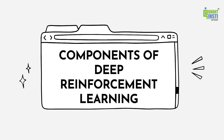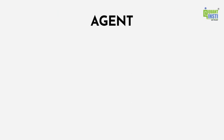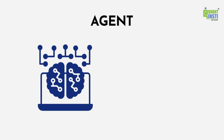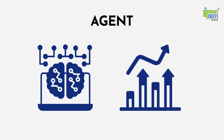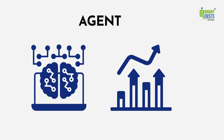Components of deep reinforcement learning. Agent: The agent is the core component of a DRL system. It is the intelligent entity or algorithm responsible for making decisions within the given environment, which, in the case of trading, is the financial market.